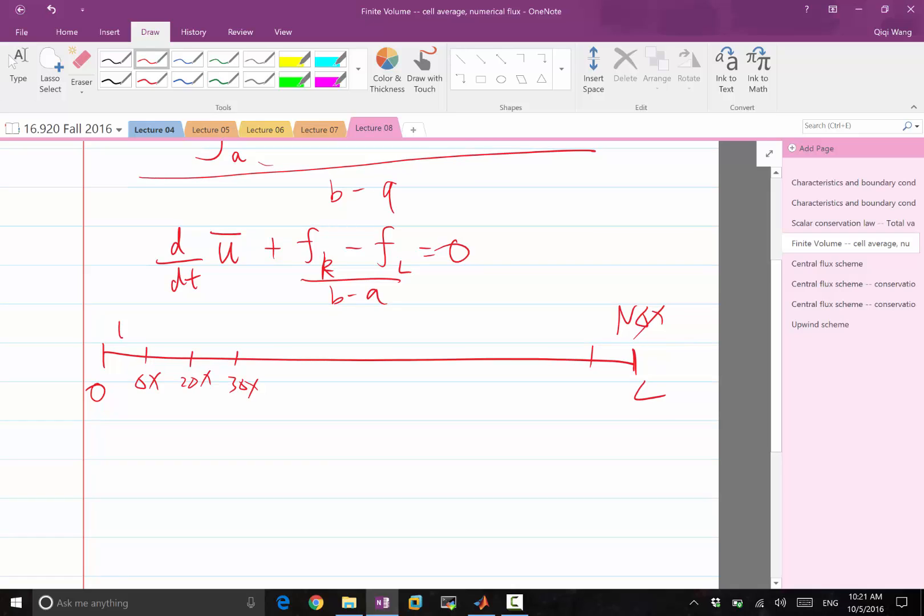So let me write this as u bar 1, so the first cell average, u bar 2, etc., u bar n. What I have is d u bar i dt, plus b minus a would be delta x, right? And this is the flux at the right side of the interval i, which I call i plus half, because it's between the interval i and i plus 1. So now we use integers to denote the cells,